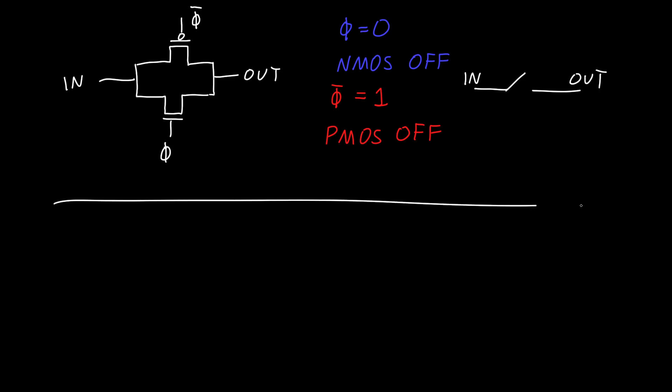But now, if phi instead, so let's say that phi is now equal to one, then our NMOS is on. And remember that NMOS can pass a zero very well. So if the input is zero, then the output will be zero, because the NMOS is good at doing that.